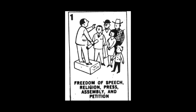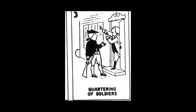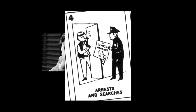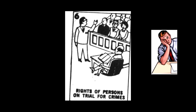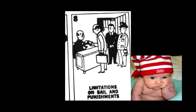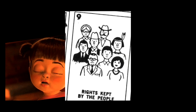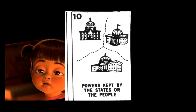Amendment 1: freedom of speech, press, religion, and petition. Amendment 2: right to bear arms. Amendment 3: quartering troops. Amendment 4: search and seizure. Amendment 5: provisions concerning prosecution. Amendment 6: right to a speedy public trial. Amendment 7: right to a trial by jury. Amendment 8: prohibiting excessive bail or cruel punishment. Amendment 9: stating that the rights listed are not limited to those included. Amendment 10: rights not held by the government are held by the people and the states.